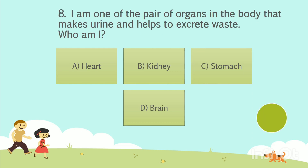Question No. 8: I am one of the pair of organs in the body that makes urine and helps to excrete waste. Who am I? Option A: Heart. Option B: Kidney. Option C: Stomach. Option D: Brain. Your time starts now. The answer is Option B: Kidney.